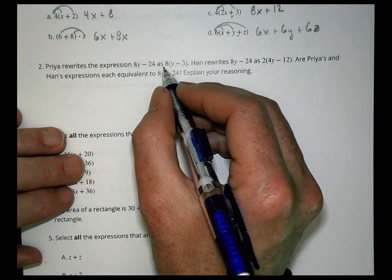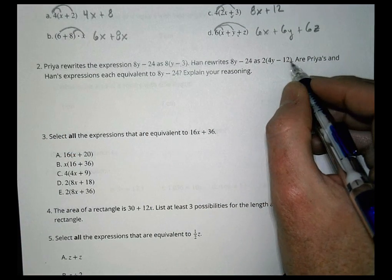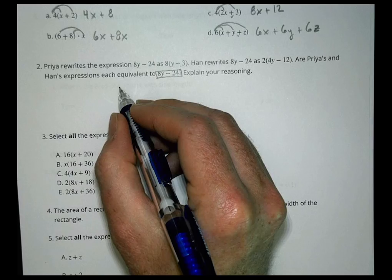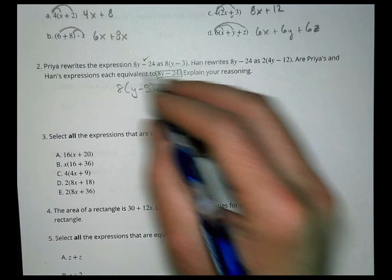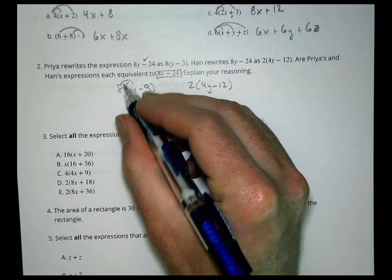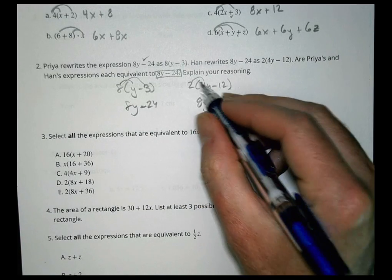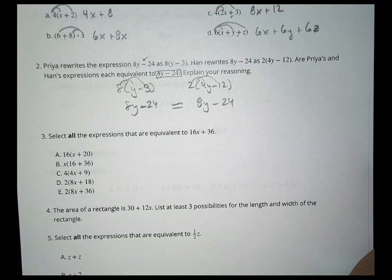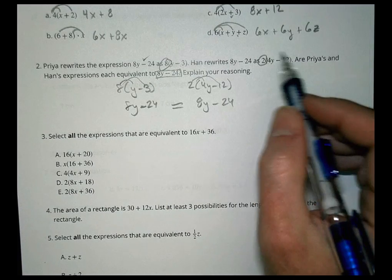Priya rewrites the expression 8y minus 24 as 8 times (y - 3). Han writes 8y minus 24 as 2 times (4y - 12). Are Priya's and Han's expressions each equivalent to what we started with? Let's see. If they're equivalent, we should be able to use the distributive property and arrive back at where we started. 8 times y is 8y and 8 times 3 is 24, keeping the minus. Here we have 2 times 4 is 8y minus 2 times 12 is 24.